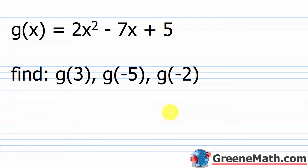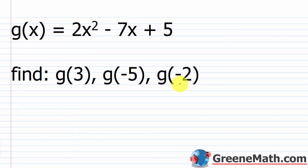Let's look at one more as a review. If I had g of x equals 2x squared minus 7x plus 5, and I wanted to find g of 3, g of negative 5, and g of negative 2, I'm just going to be plugging in for the variable. It's not very hard.